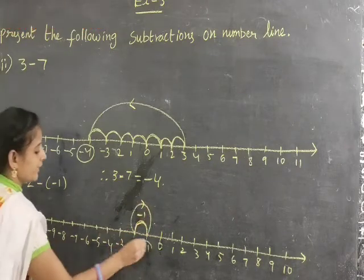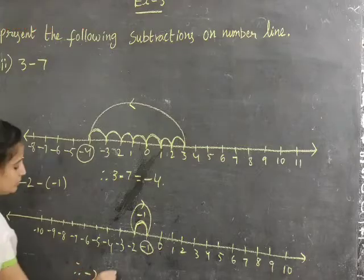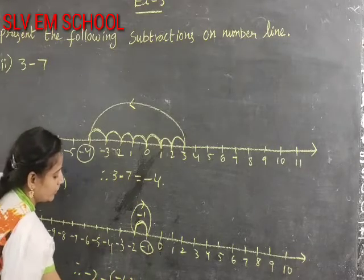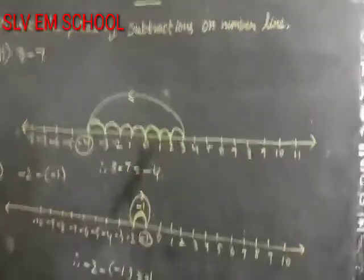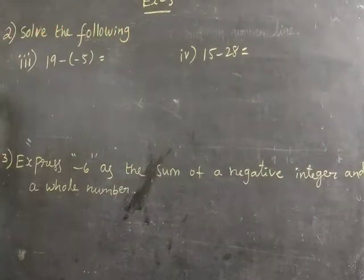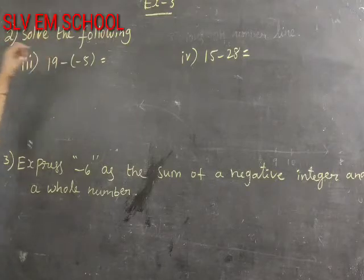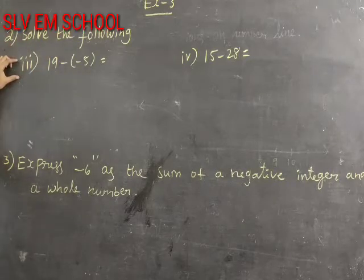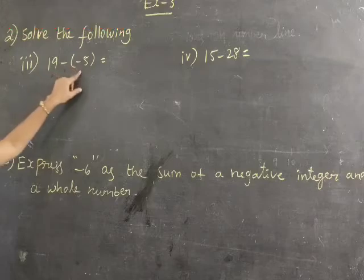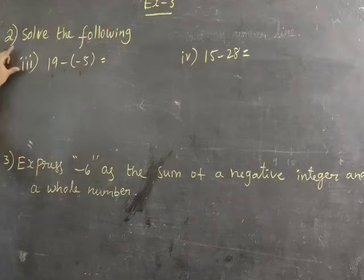So we get the answer is minus 1. Minus 2 minus minus 1 equals minus 1. Now going to the second problem: solve the following. The third one is 19 minus minus 5. We have to calculate this.